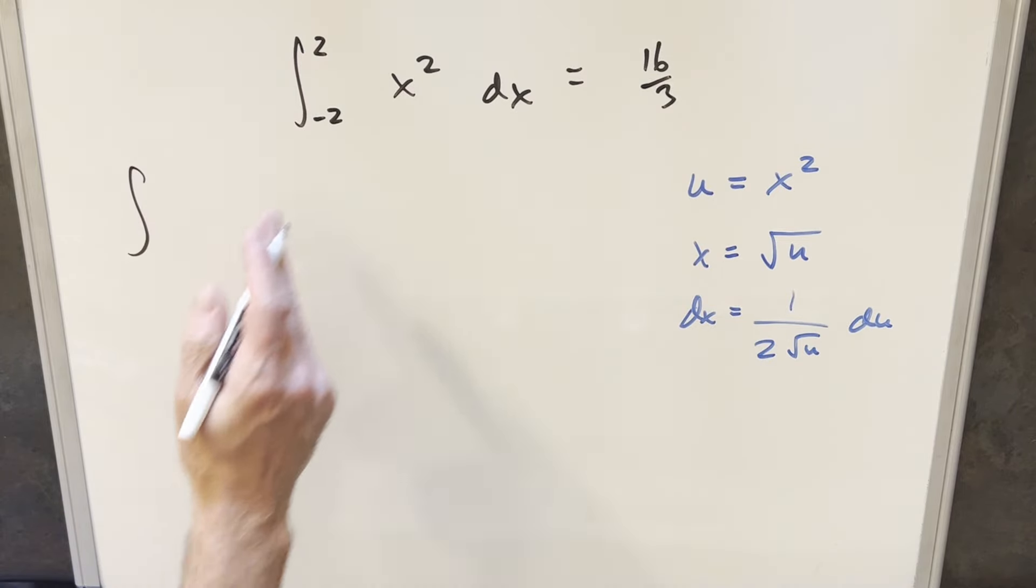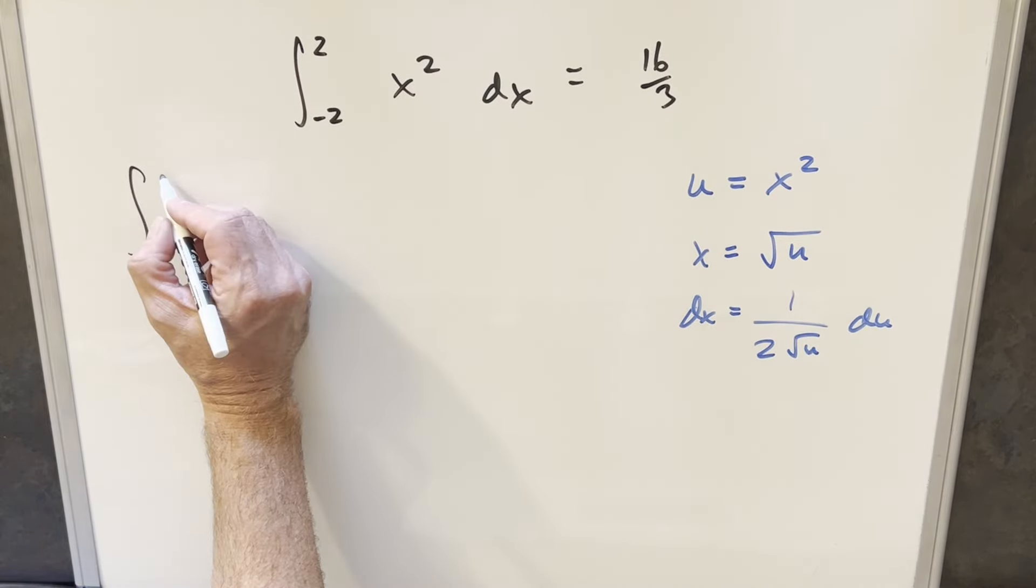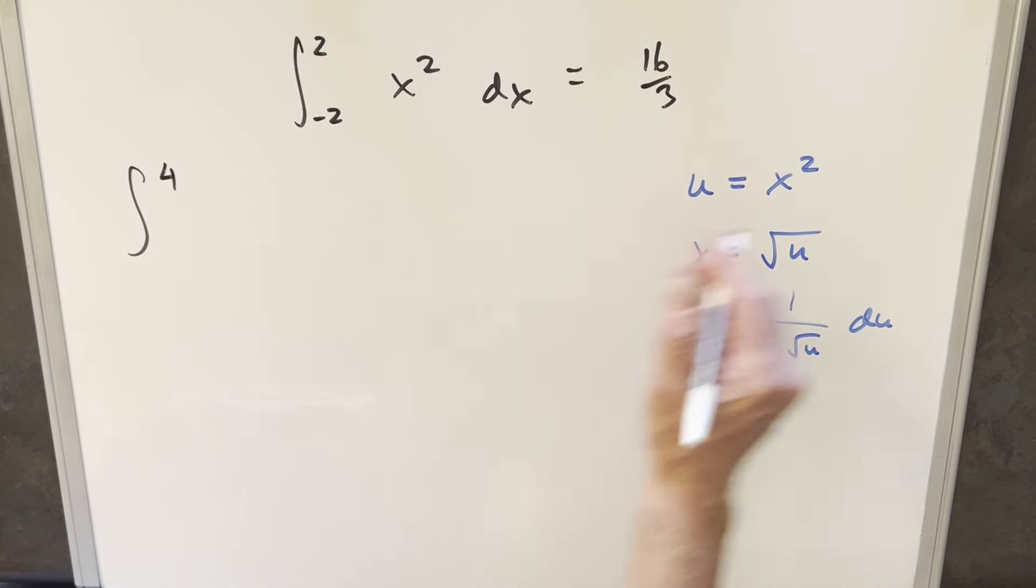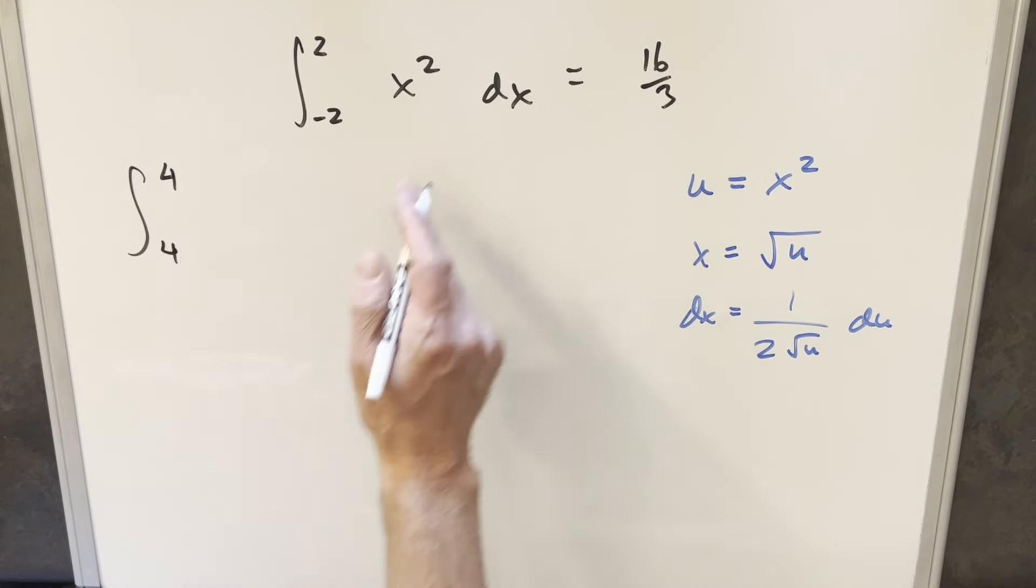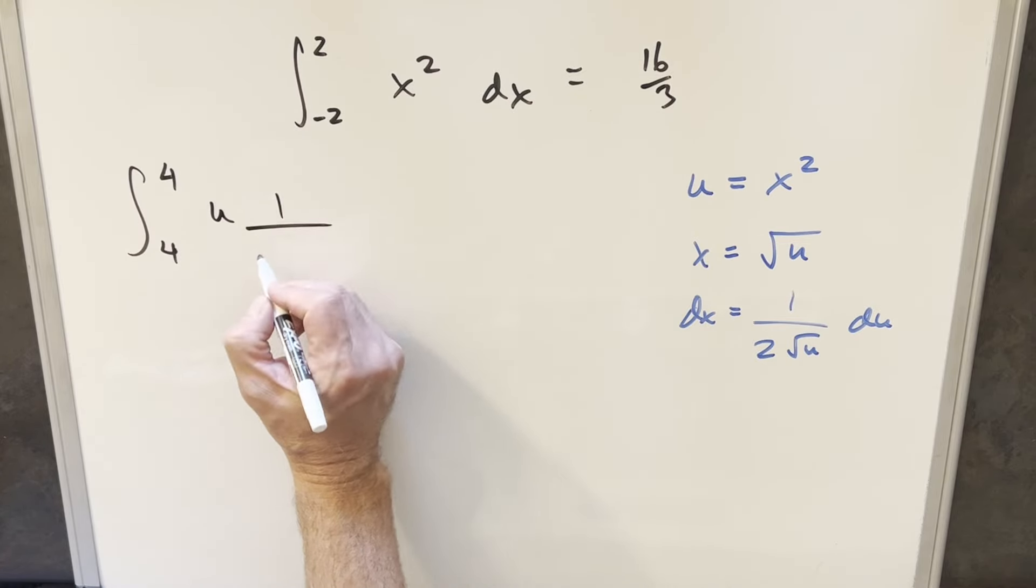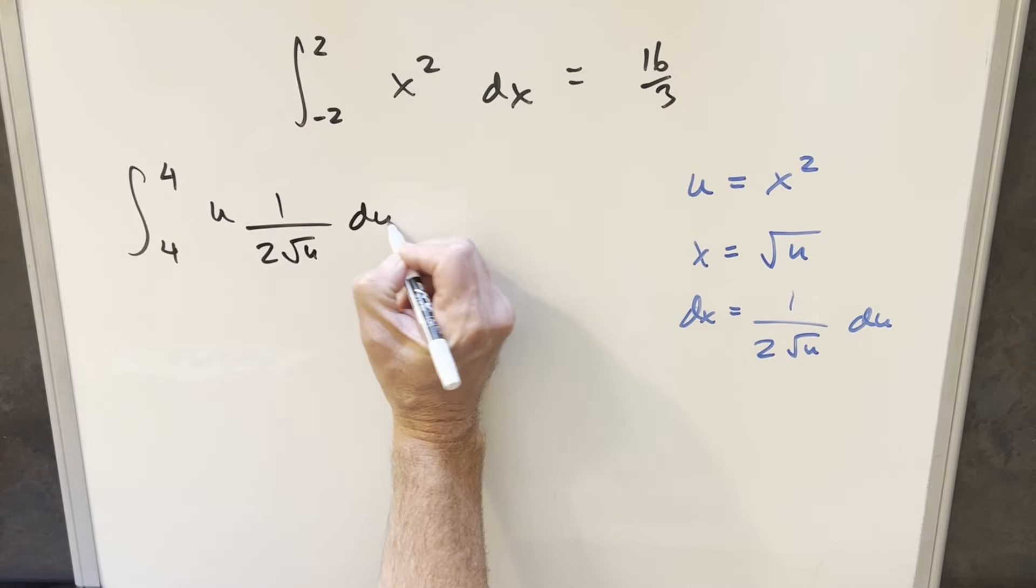Go ahead and substitute this first, plugging in 2 someplace. So first plugging 2 in right here, we have 2 squared or 4. Next, plug in minus 2. Minus 2 squared is also a 4. Then we do our x squared is going to be u and we have all this other stuff. 1 over 2 square root of u du.